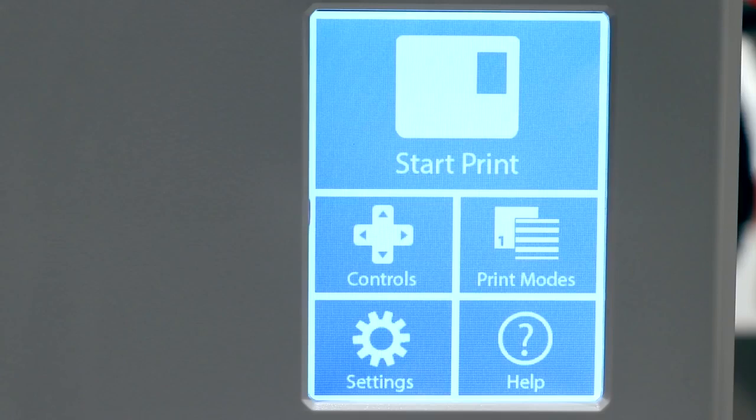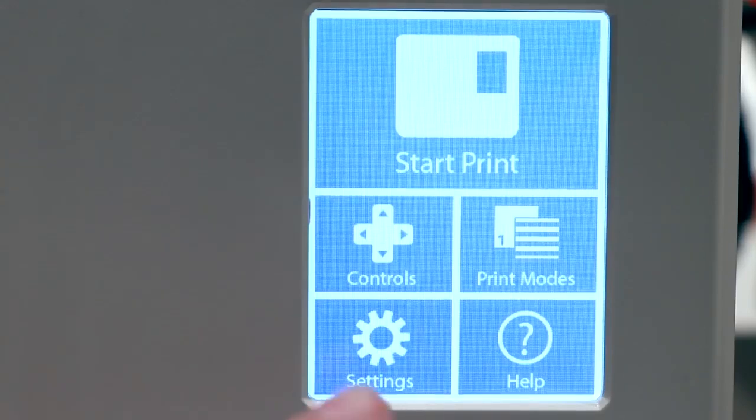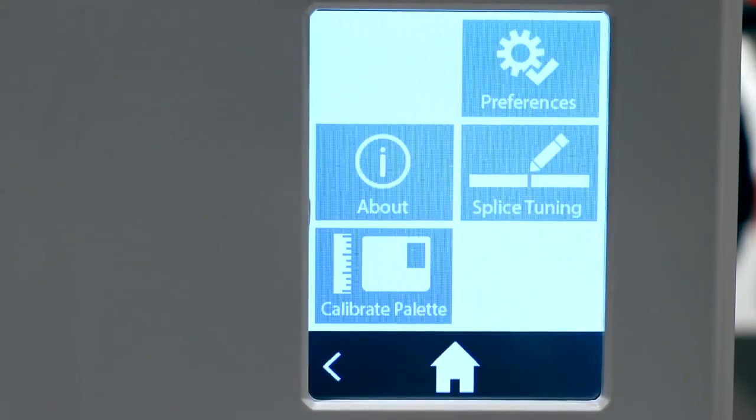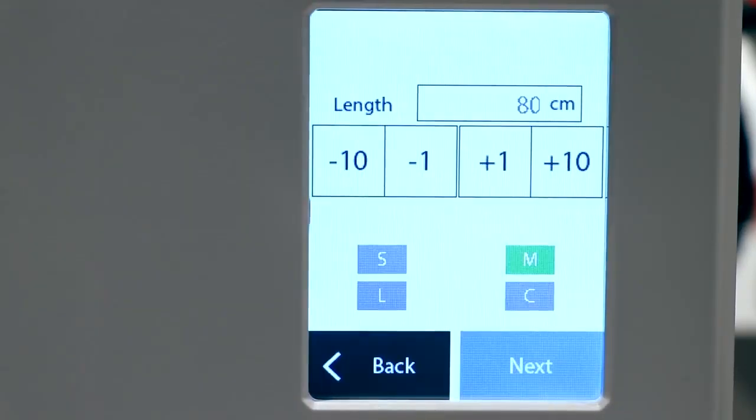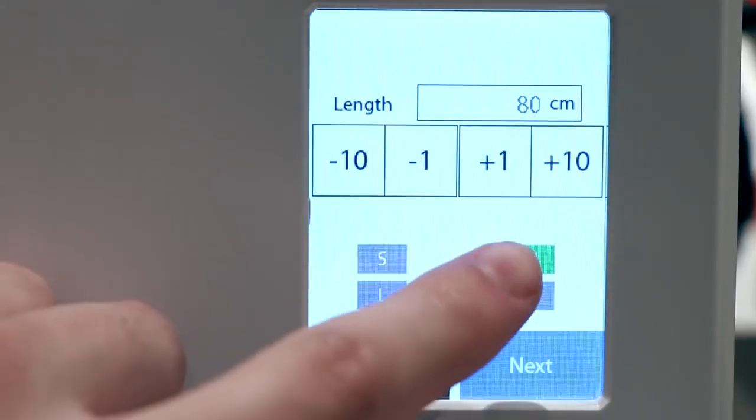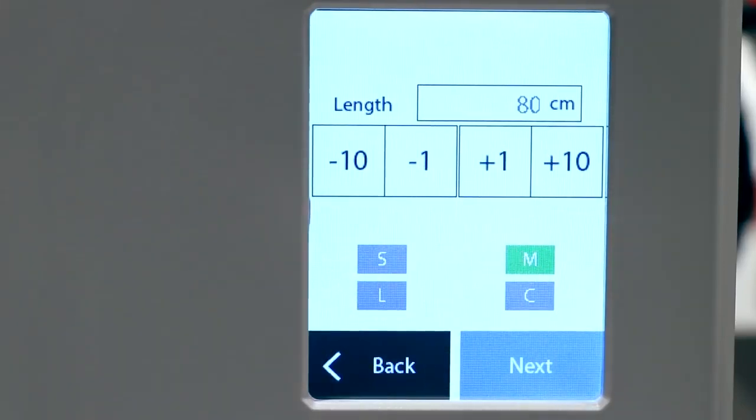Before starting our print, I would like to remind you to make sure you have selected the proper outgoing tube length that you are going to use on this print. Palette 2 comes with a small and medium outgoing tube. Palette 2 Pro comes with these and a larger tube. The length of these tubes are shown in centimeters. Here is where it is located on the Palette 2 menu.